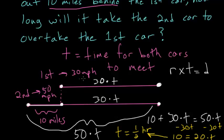So the total time it takes for each car to meet, and for the second car to pass the first car, is one half of an hour.